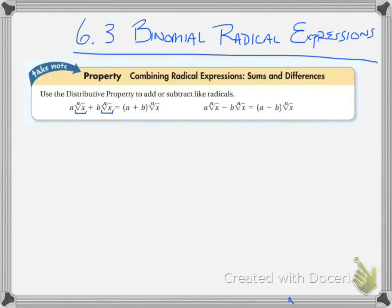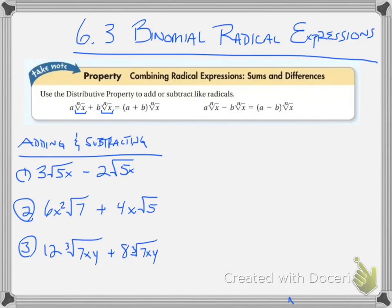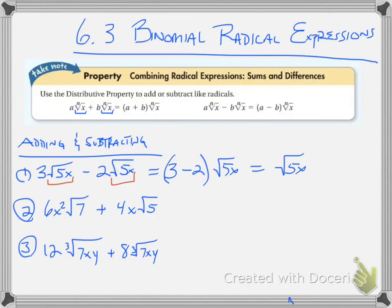Here are a couple of examples of adding and subtracting. For this first one: 3 square root of 5x minus 2 square root of 5x. Because they're both square root of 5x and those are exactly the same, all I'm going to do is 3 minus 2 times the square root of 5x. That like term stays the same, so that becomes 1 square root of 5x.